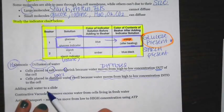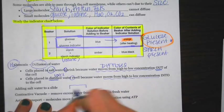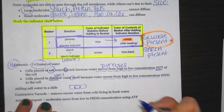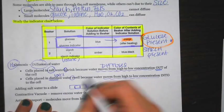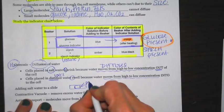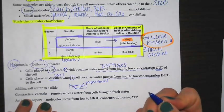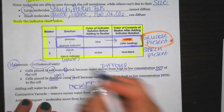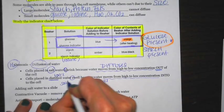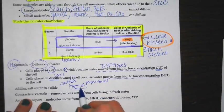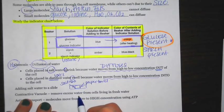When adding salt water to a slide, you have a slide with a cover slip over it. You place a little piece of paper towel on one side, then use a dropper or pipette — either word is acceptable — to apply salt water on the other side. As you apply the salt water, the regular water that was initially underneath the cover slip gets sucked up by the paper towel.